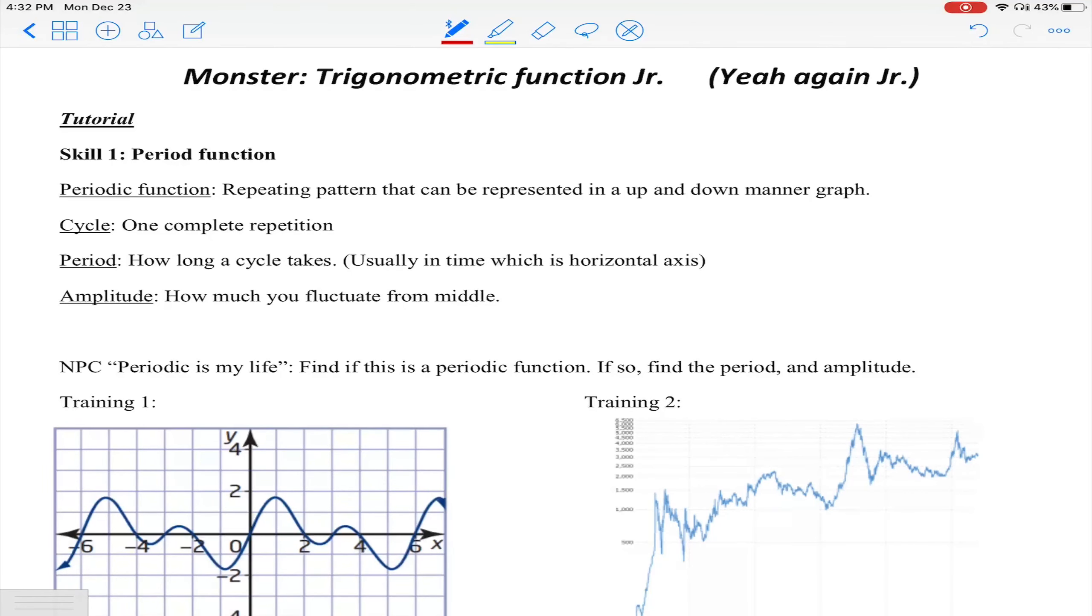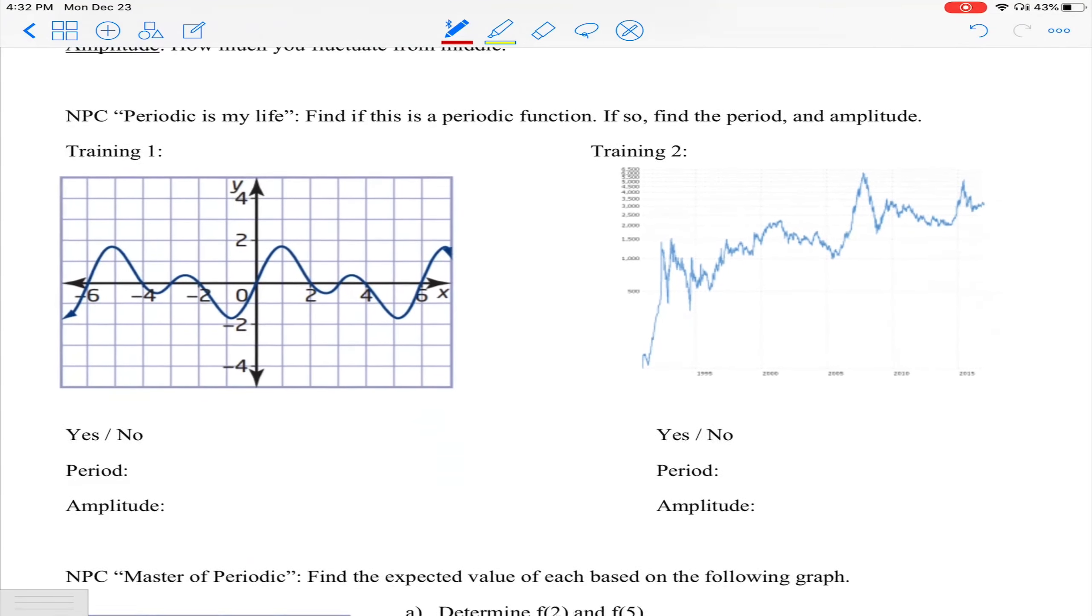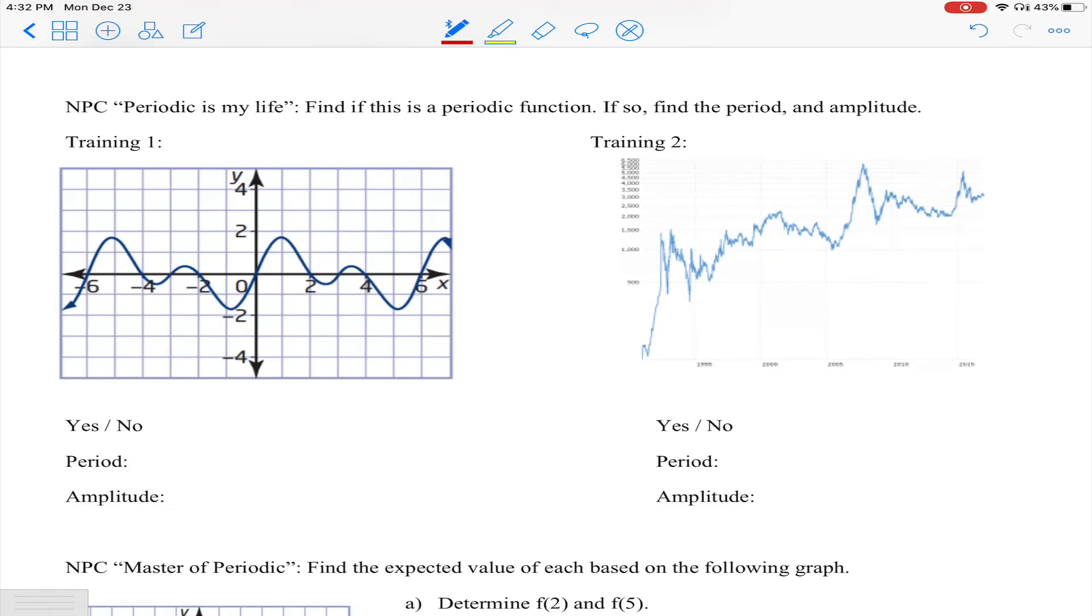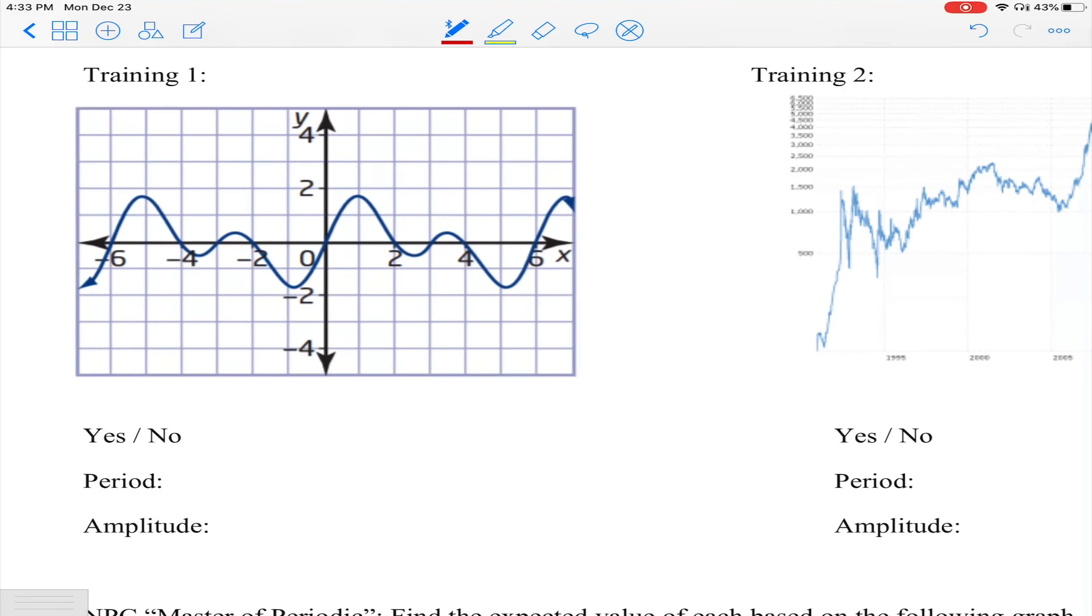Let's take a look at the actual NPC to help us train this skill further. The NPC 'Periodic is my life' - find if this is a periodic function. If so, find the period and amplitude. So let's take a look at training one and two.